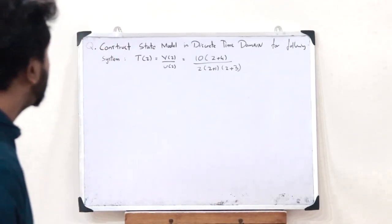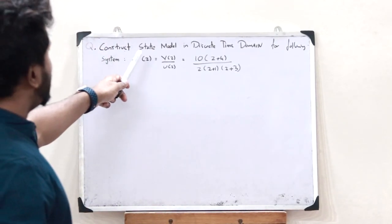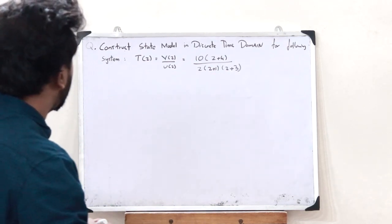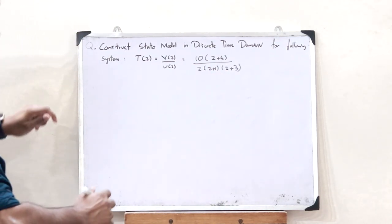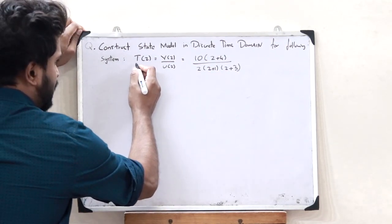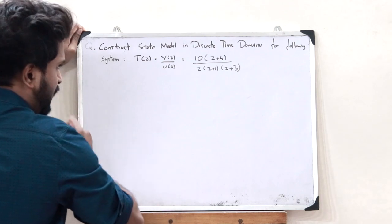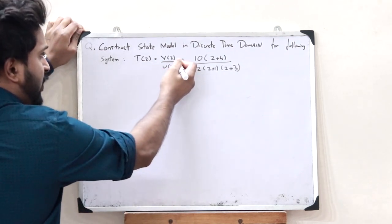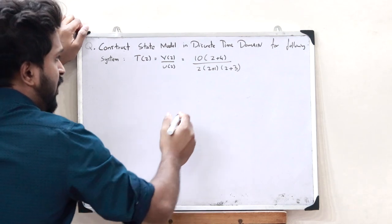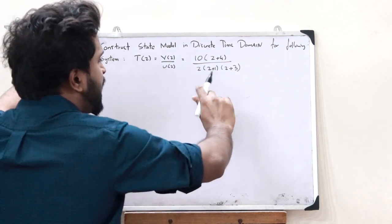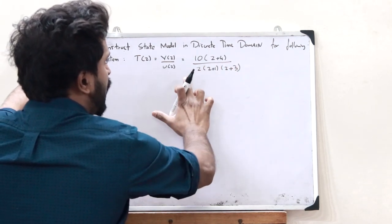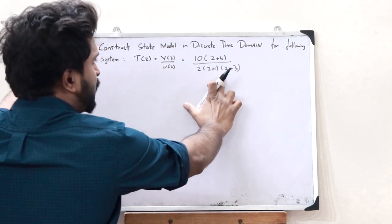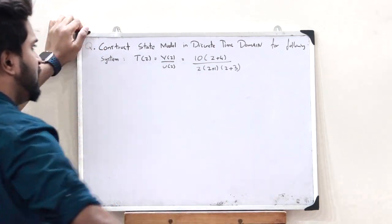Let us see this particular question: Construct the state model in the discrete time domain for the following system given by the Z transfer function T of Z, which equals the output divided by the input, Y of Z divided by U of Z, which is equal to 10 times (Z + 4), all divided by Z times (Z + 1) times (Z + 3).